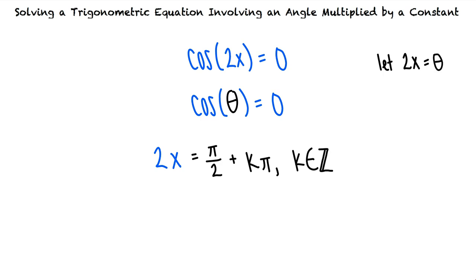To isolate x on the left side of the equation, we need to divide both sides by 2. When we do this, we see that x equals pi fourths plus k pi halves, k element z.